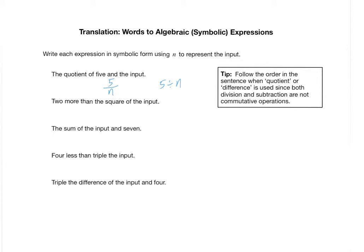How about two more than the square of the input? We'll worry about the two more later. Let's first get this guy right here, the square of the input. Your input is N, and if you square it, that means to raise it to the second power. And then we want two more. So how would you make it two bigger? Well, you would simply add 2 to it. So N squared plus 2 is the translation of this sentence.